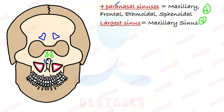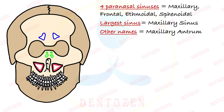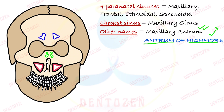Another important viva question: what is the other name for this maxillary sinus? It is also called the maxillary antrum, and another special name given to it is Sinus Maxillaris of Highmore, named after Nathaniel Highmore, who described this sinus for the first time. That is a very popular viva question.